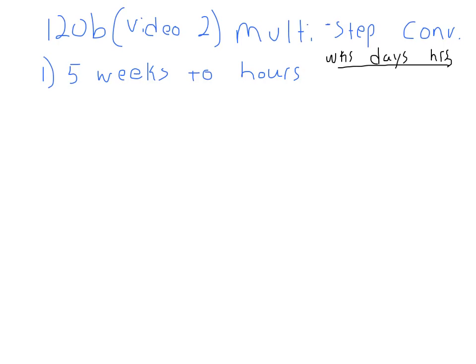Then the next question is, do we need to make any more pit stops? Do we need to stop anywhere in between days and hours? Do you know the relationship between hours and days? Yes — there are 24 hours in a day. So we're going to write these conversions out. One week is equal to seven days, and one day is equal to 24 hours. We always do this first — it really helps.